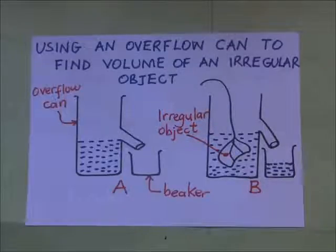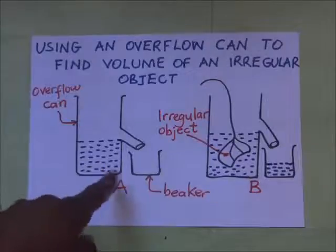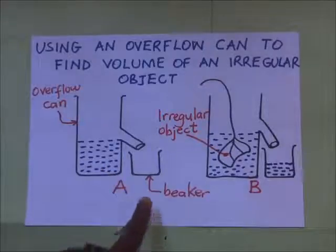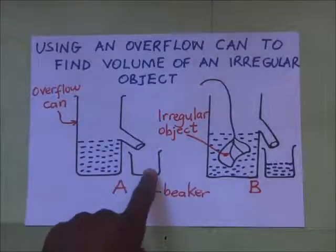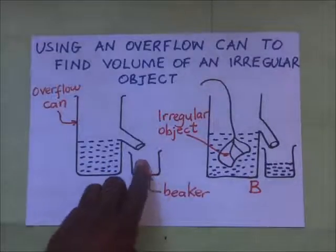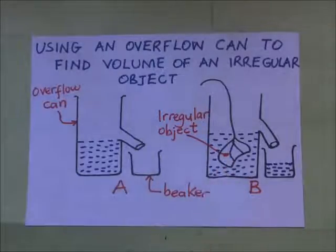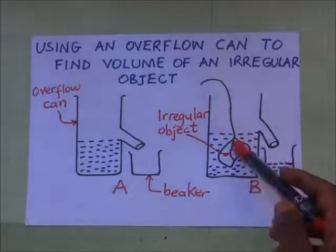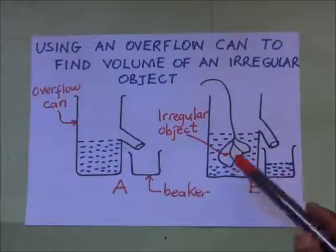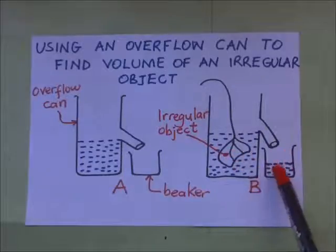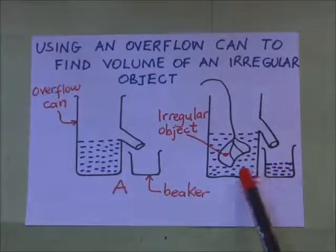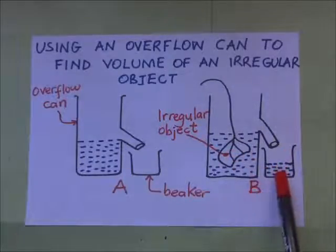Right before us is an overflow can, shown in diagram A. We have filled it with water and we have an empty beaker here. In diagram B, we have our irregular object, which is probably a stone. We have tied a string on this stone.